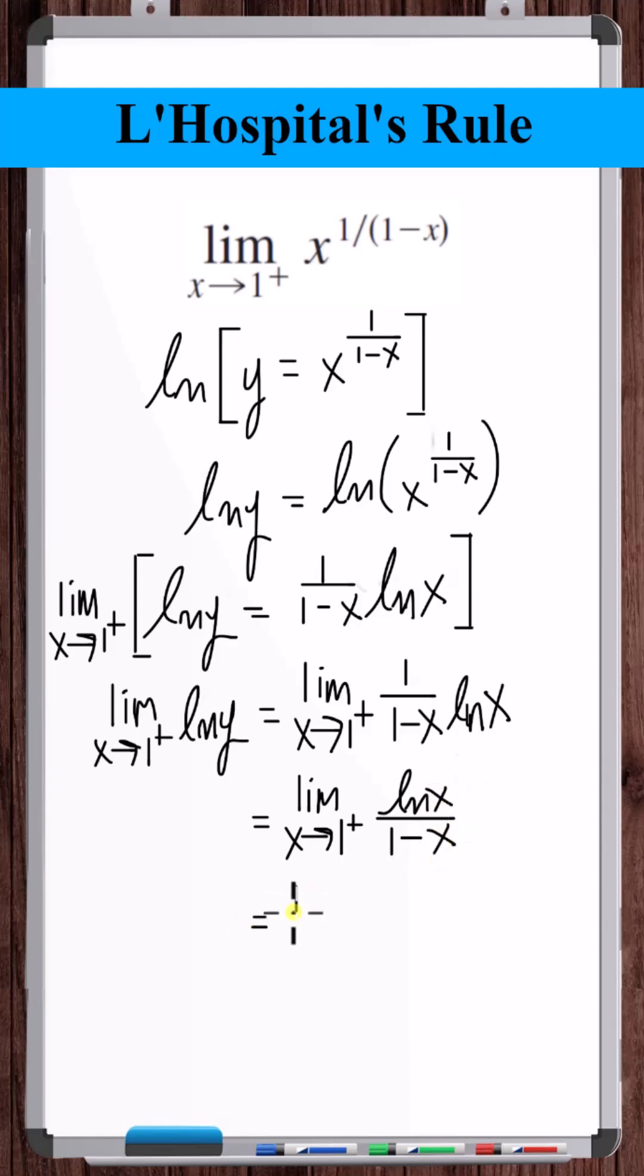This type of indeterminate form, we can use L'Hopital's rule. Derivative of natural log of x is 1 over x. Derivative of 1 minus x is minus 1. Plugging in 1, this limit approaches minus 1.